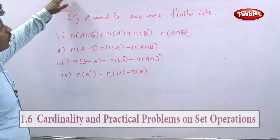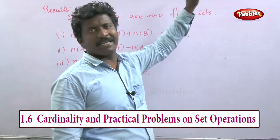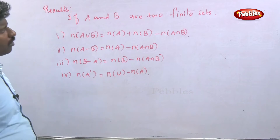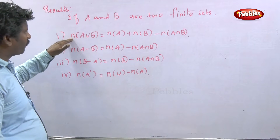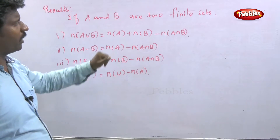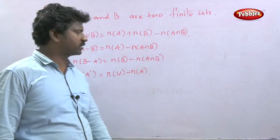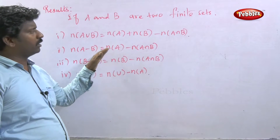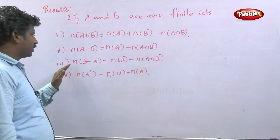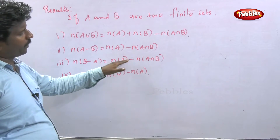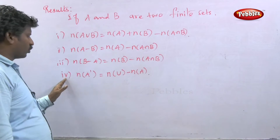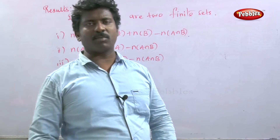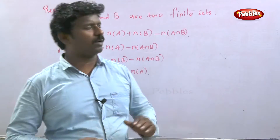The next topic is cardinality and practical problems on set operations. The formula for cardinality: if A and B are two finite sets, n of A union B is equal to n of A plus n of B minus n of A intersection B. The second formula: n of A minus B is equal to n of A minus n of A intersection B. The third: n of B minus A equals n of B minus n of A intersection B. The fourth: n of A dash equals n of U minus n of A.